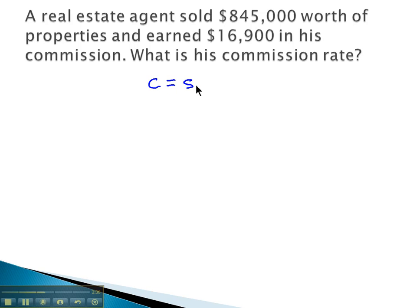The commission equation is sales or price times the rate. And we need to make sure we clearly identify what these numbers represent. The $845,000 is what he sold, that's his sales.